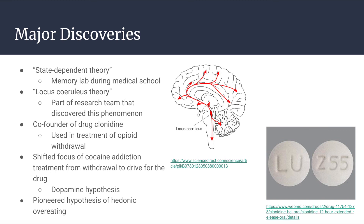This led him and a team of other researchers to invent the drug clonidine, which is now used for the treatment of opioid withdrawal. His research then took a different turn, and he focused on his dopamine hypothesis, which states that repeated cocaine use causes a depletion of dopamine, which interferes with motor function and causes anhedonia, or the inability to feel pleasure. In his more recent research, he has focused on eating disorders and pioneered the hypothesis of hedonic overeating, which refers to eating for pleasure, or eating even though we know that we are not hungry. This idea has become widely known in recent years.